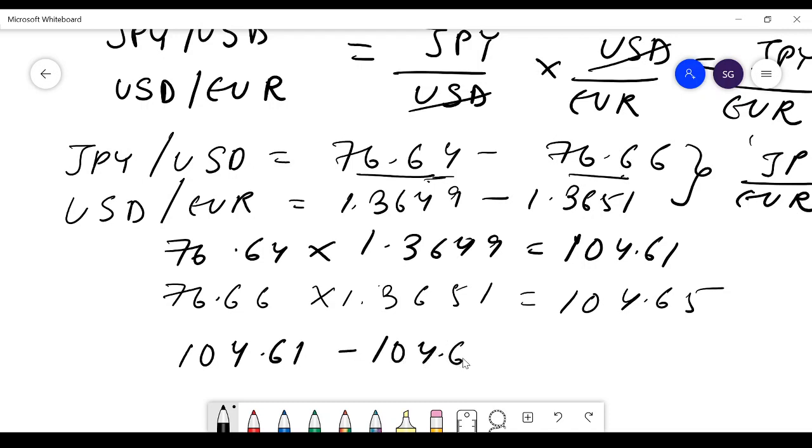This would be Japanese yen by Euro. Bid rate in the format 104.61 to 104.65, where bid rate is the buying rate and ask rate is the selling rate.